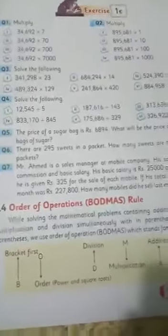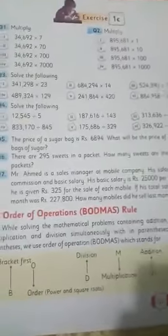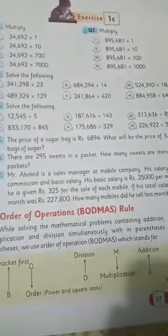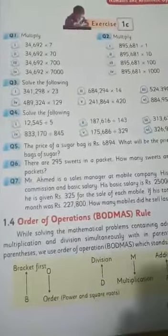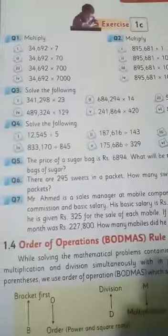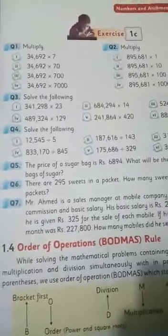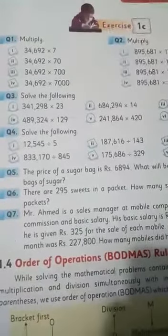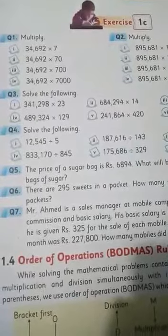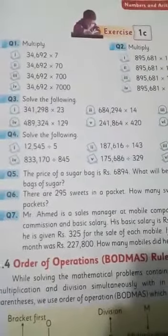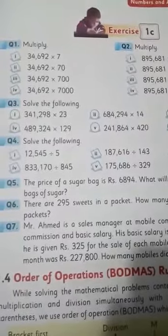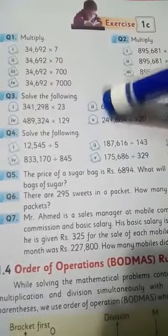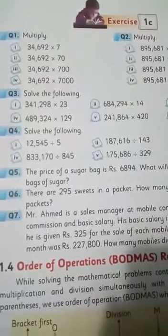In today's lecture we will do work of six periods, from page number 17 to page number 20. Exercise 1C, question number 3. We have to solve the following question number 3 which has six parts. In the first part, we multiply numbers using the same method which we have done in the example.